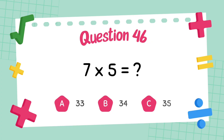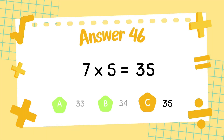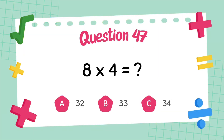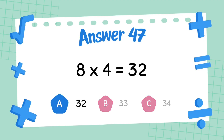What is 7 multiply 5? The answer is 35. What is 8 multiply 4? The answer is 32.